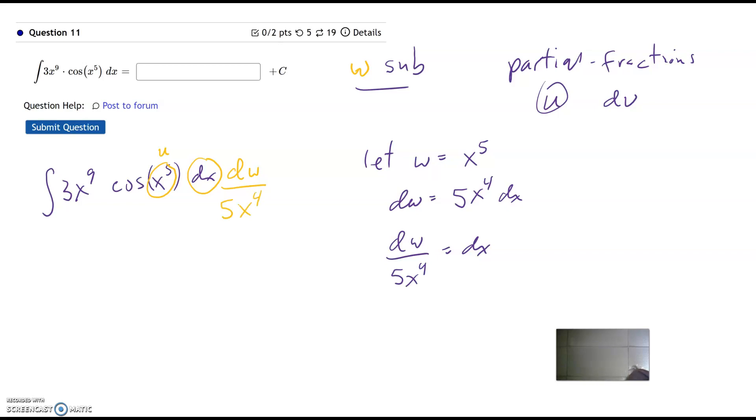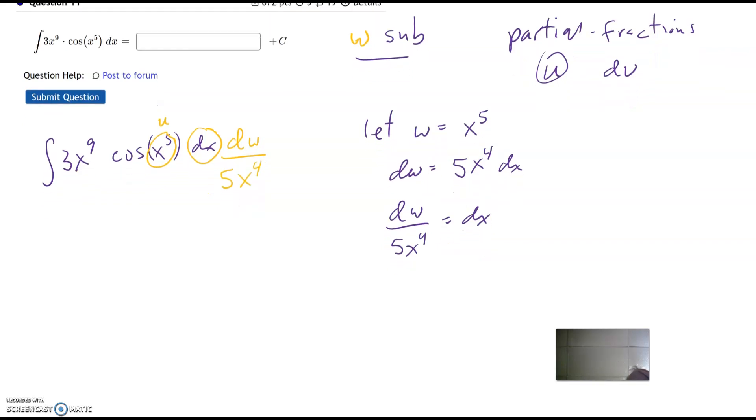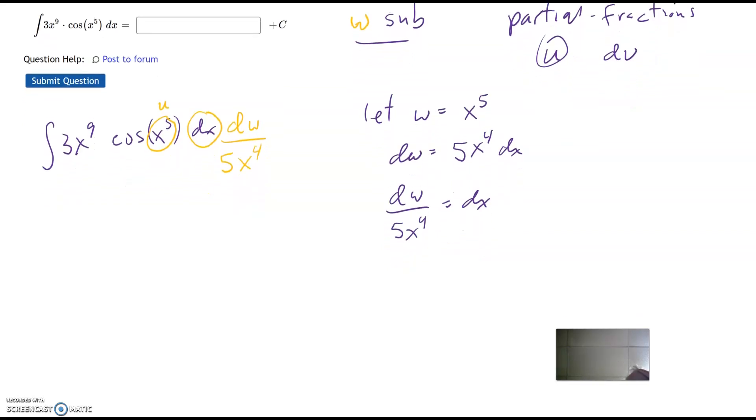Okay, so now let's carry out the w substitution. So I've got the 3 and the 5. So that'll just be 3 fifths. Okay, I've got x to the ninth divided by x to the fourth is x to the fifth. Okay, and then I've got cosine u du.